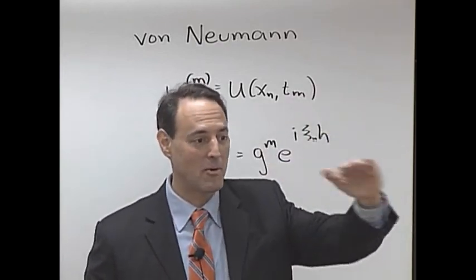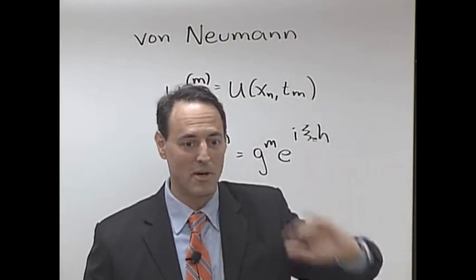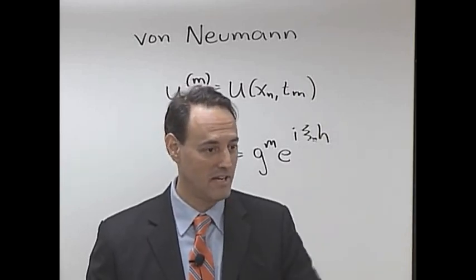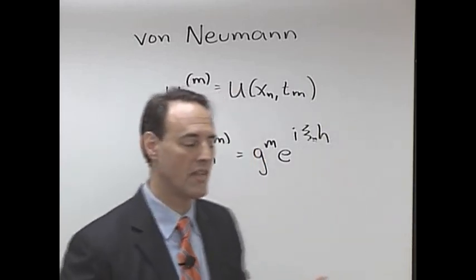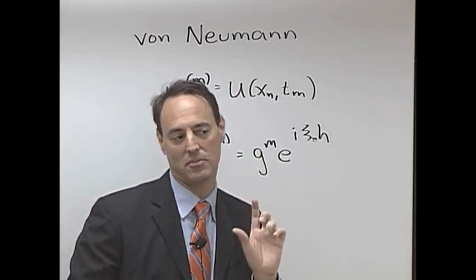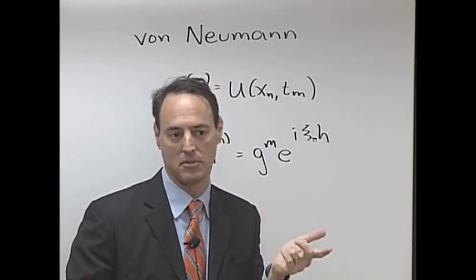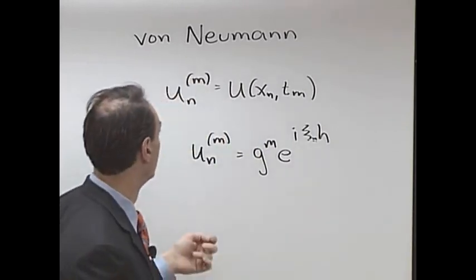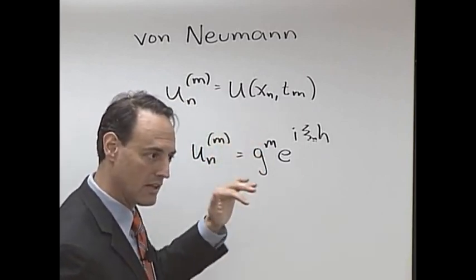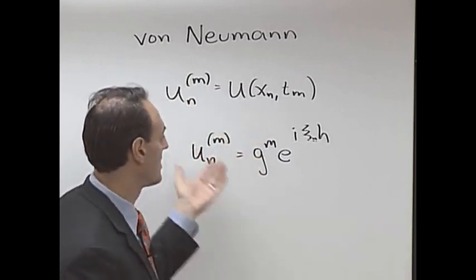Last time in class, very exciting, we worked our way through this von Neumann analysis for the one-way wave equation with forward Euler, backward Euler, leapfrog 2-2, McCormack scheme—we hit all these ones and saw that it doesn't look that much different in terms of the iteration but a huge difference in terms of stability.